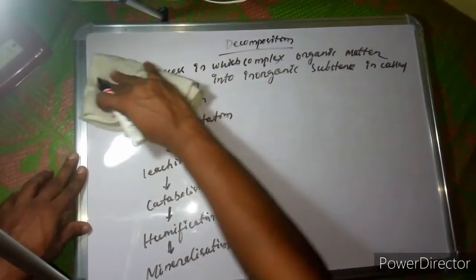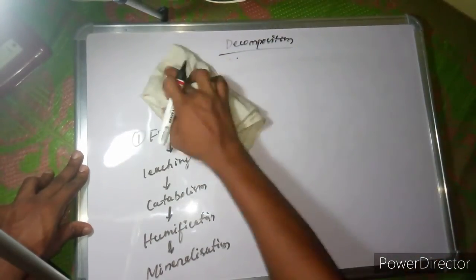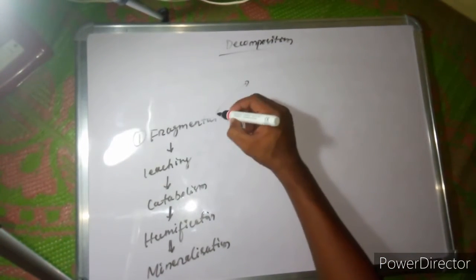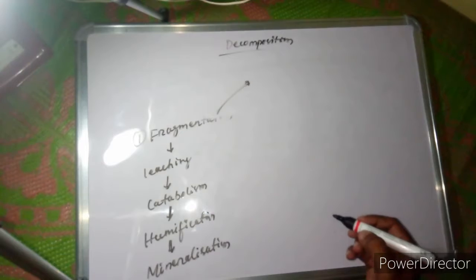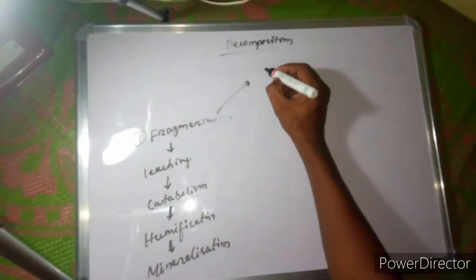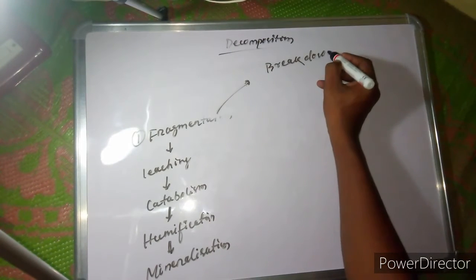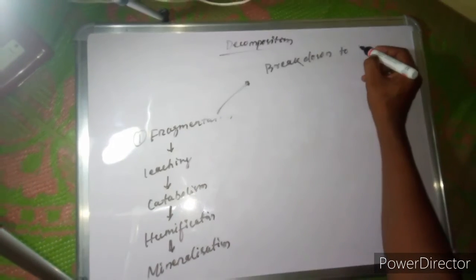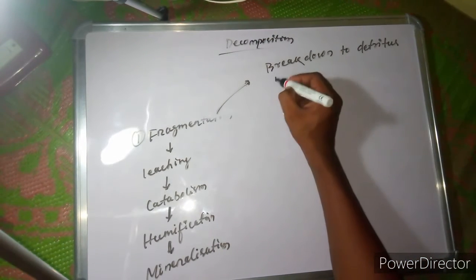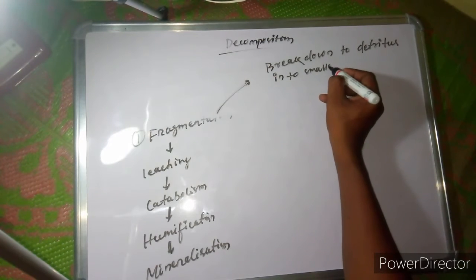First step: fragmentation. What is fragmentation? It is the process of breakdown of detritus — breakdown of detritus into smaller particles.